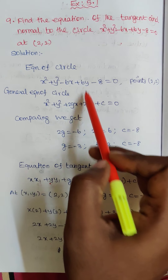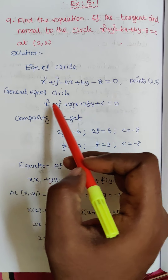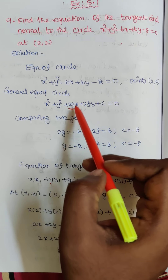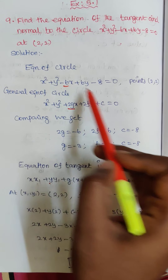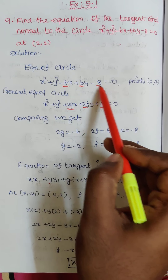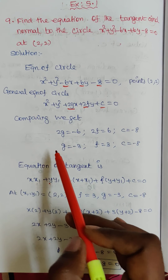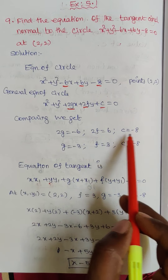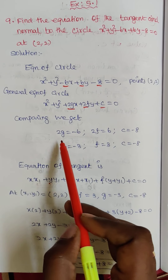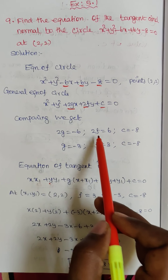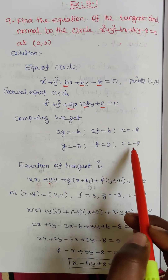We have to compare these two equations. So 2g is equal to minus 6, 2f is equal to 6, and c is equal to minus 8. Therefore g is equal to minus 3, f is equal to 3, and c is equal to minus 8.